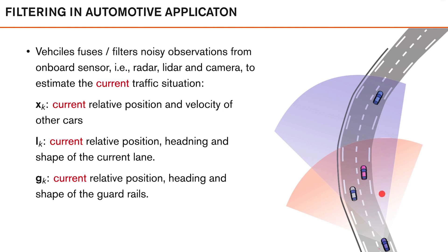Consider this illustration where we have a host vehicle equipped with a radar and a camera. The radar gives us range, angle, and range rate to objects reflecting the radar signal — for example, other vehicles or a metallic guardrail. The camera can detect and classify vehicles, and can also detect lane markings on the road. The information from these sensors is then used to estimate, for example, the current relative position and velocity of other vehicles — where they are, where they are heading — and we call this state vector x1k for that vehicle.